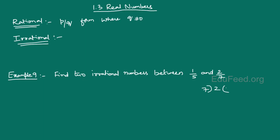Now irrational numbers are those which can't be represented in p by q form. We can define it in a different way: any decimal number which is non-terminating and non-repeating would be an irrational number because it can't be represented in p by q form.